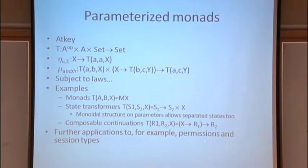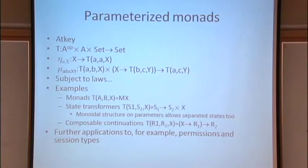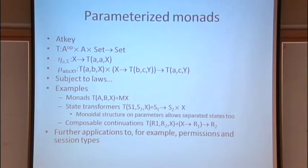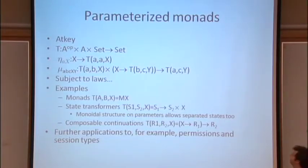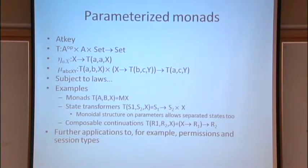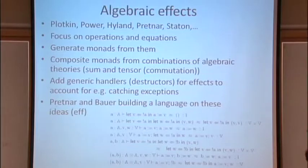Some other examples involve permissions and session types — computations constrained to evolve according to some kind of state machine. For example, if you're formalizing protocols of interaction across network devices where you're supposed to make a call of one sort first, then do something else, with a regular expression of the actions, you can encode that in terms of parameterized monads in a very elegant way. The bind operation here is what Atkey calls mu, but it's really the bind rather than the multiplication in the strict sense.